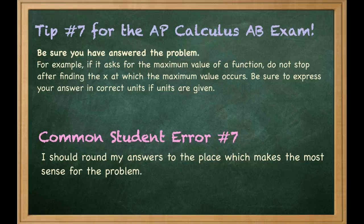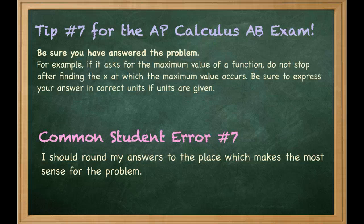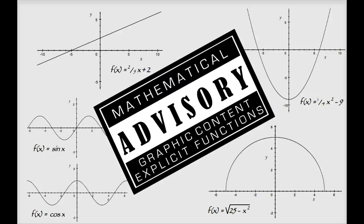Exam tip number 7: be sure you have answered the problem. If it asks for the maximum value of a function, do not stop after finding the x at which the maximum occurs. Give the x value if asked where, and the y value if asked what the maximum value is. Express answers in correct units if units are given. Common student error number 7: do not round to whatever place seems right — pay attention to rounding instructions given, and otherwise always round to the thousandths place. That's it for today's lecture. God bless you boys and girls.